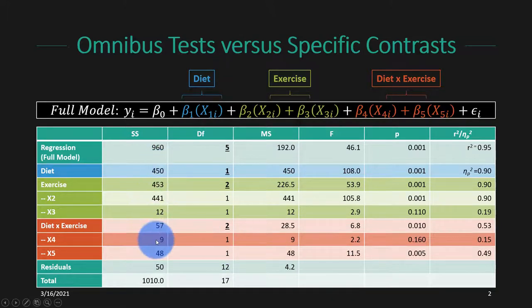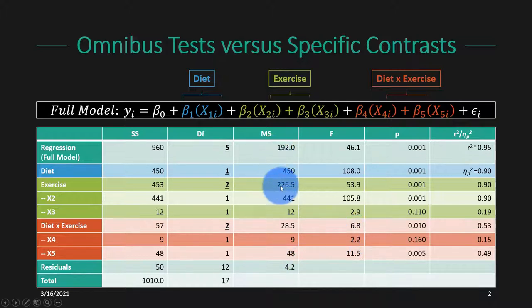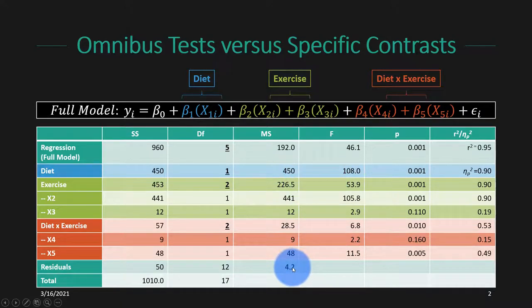We worked from left to right, showing that once we know the sum of squared errors explained by each effect, we divide it into the mean squared error explained by that effect. Then we calculate the F-ratio by taking the mean squared error of the effect divided by the mean squared error of the residuals, and calculate a p-value for that F-ratio under the null hypothesis — how likely is it that we'd observe an F-value that large or larger, assuming no relationship between those variables.